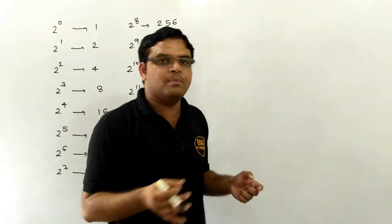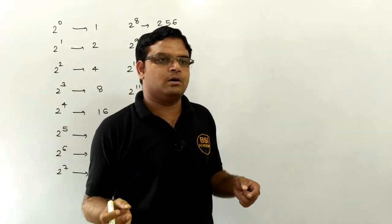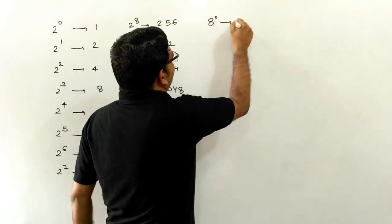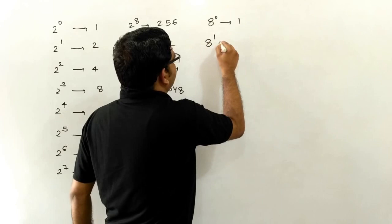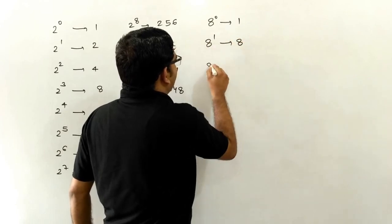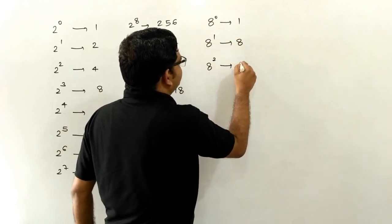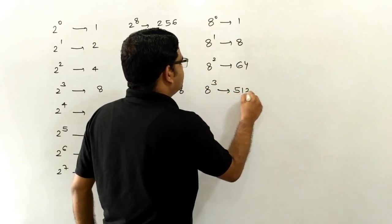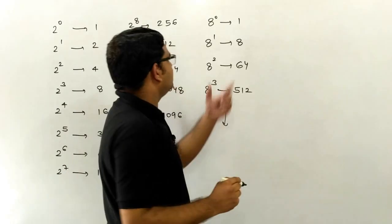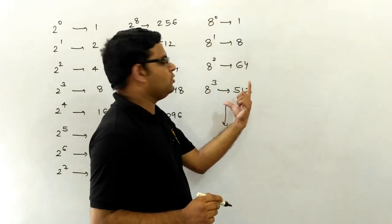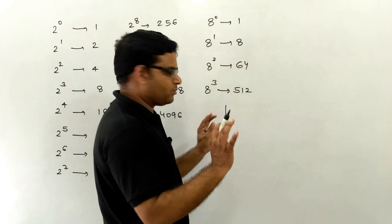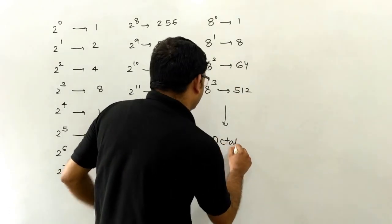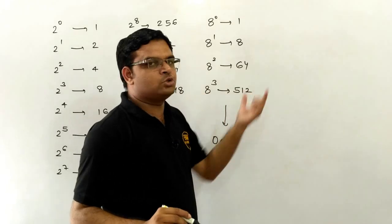For octal conversion, please write all these values: 8 raised to power 0 is 1, 8 raised to power 1 is 8, 8 raised to power 2 is 64, and 8 raised to power 3 is 512. For your exam point of view, these values are very important. Up to 8 raised to power 3 is quite enough — we do not need to go higher.